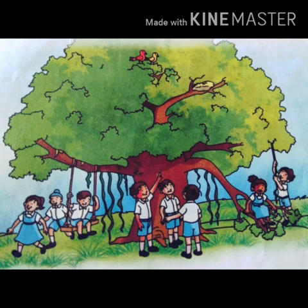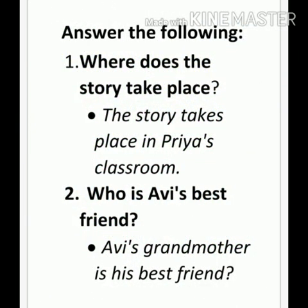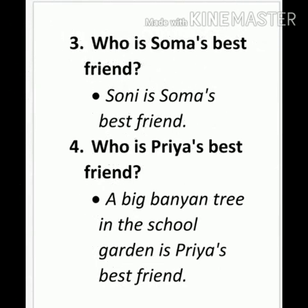Some question answers and opposites are given, and make sentences you have to do on your own. Let's start. Answer the following. Where does the story take place? The story takes place in Priya's classroom. Question number two: Who is Avi's best friend? Avi's grandmother is his best friend. Question number three: Who is Soma's best friend? Soni is Soma's best friend. Question number four: Who is Priya's best friend? A big banyan tree in the school garden is Priya's best friend.